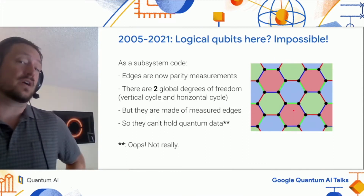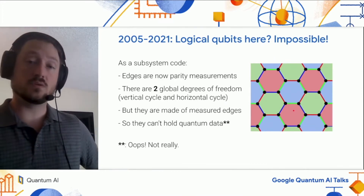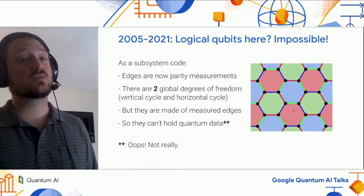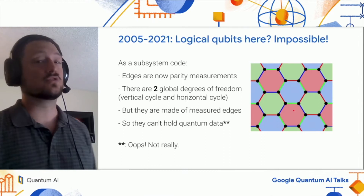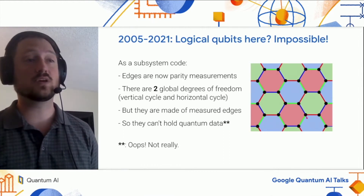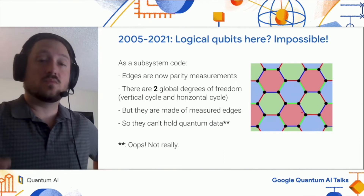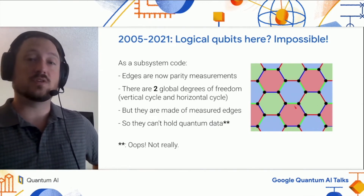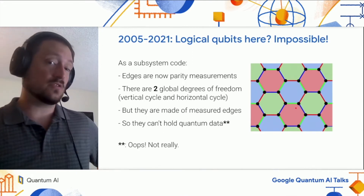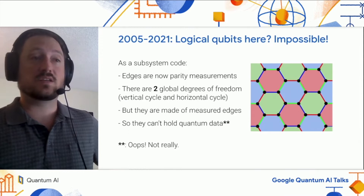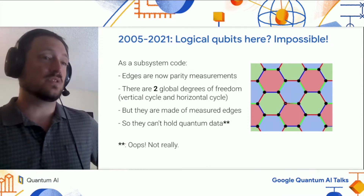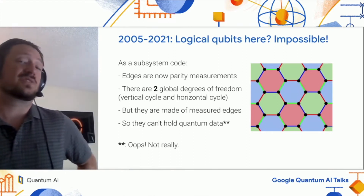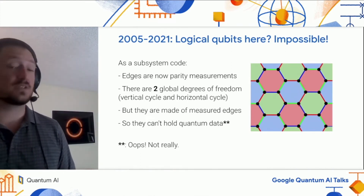The natural thing to try to turn the Honeycomb model into a code is to replace each of the interactions with a parity measurement. So each of these edges would now represent a two-body measurement to perform. For example, this blue edge says we're supposed to measure the ZZ operator between these two qubits. These parities don't all commute — for example, this XX measurement anticommutes with this YY measurement and with this ZZ measurement. Because the measurements aren't all compatible, what we have here is what's known as a subsystem code.